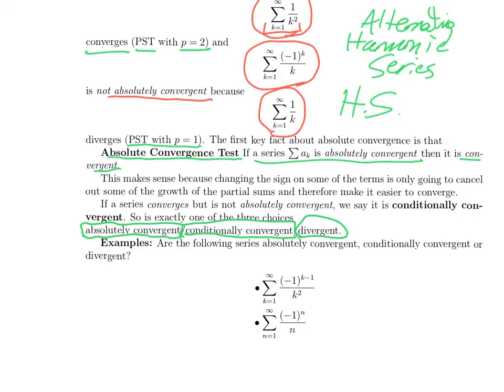So the alternating harmonic series converges by the alternating series test, but its absolute value diverges. So the alternating harmonic series is conditionally convergent. The alternating 1/k^2 series is absolutely convergent.